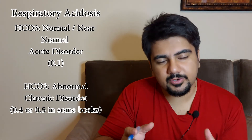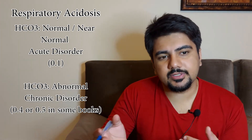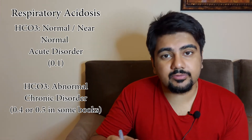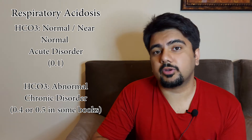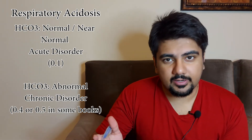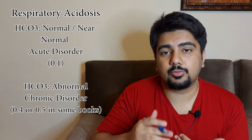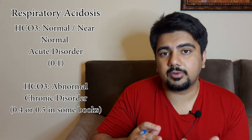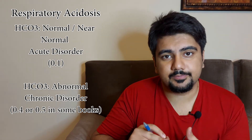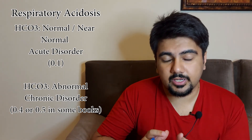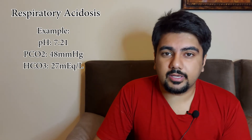In acute respiratory conditions, the acidosis is not as quickly or drastically compensated by the renal system, so the coefficient in the equation is 0.1. On the other hand, in chronic respiratory disorders, the coefficient is increased to 0.4, so there is a higher amount of compensation by the renal system. We're going to focus on chronic respiratory disorders and discuss them with an example.